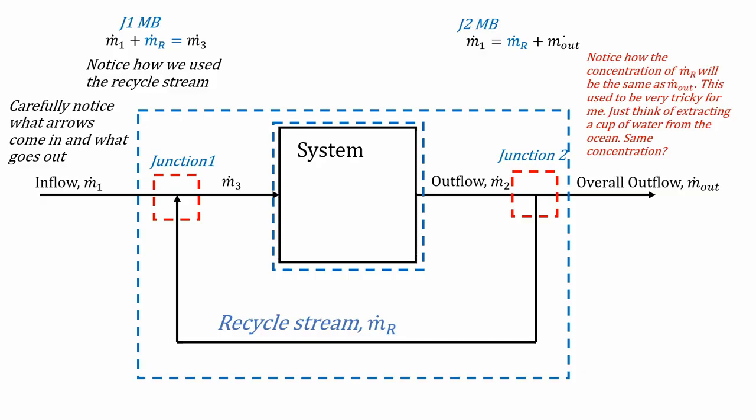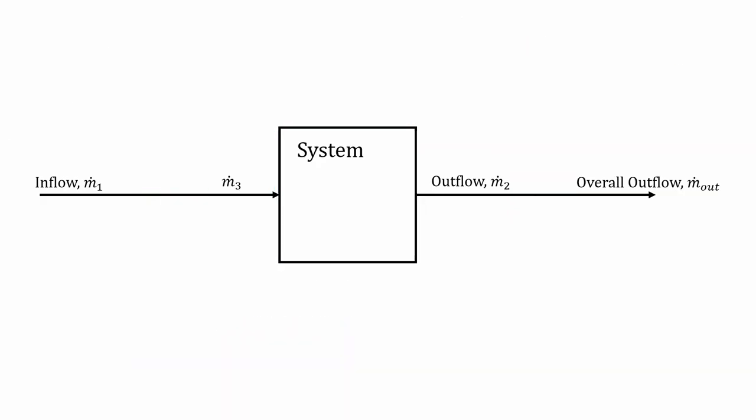And by the way, we can apply the same principles for a bypass stream. So recycle, you're sending some of your outfeed back into your system. And for bypass, we're bypassing the junction to our outflow, not going into the system. So let's take a look at an example.